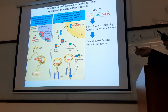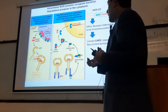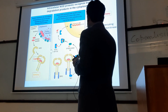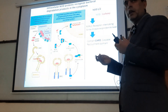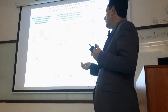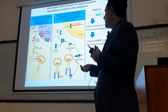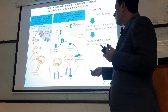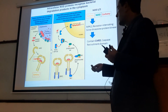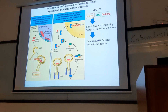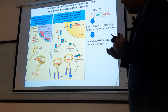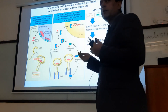The CARD domain in NOD receptors is used for another purpose. CARD domains can not only capture caspases but can also bind with other proteins that have the same CARD. For instance, the NOD2 protein and RIPK2 each have a CARD domain, and the CARD domains of these two proteins join together, assembling different proteins inside the cell.